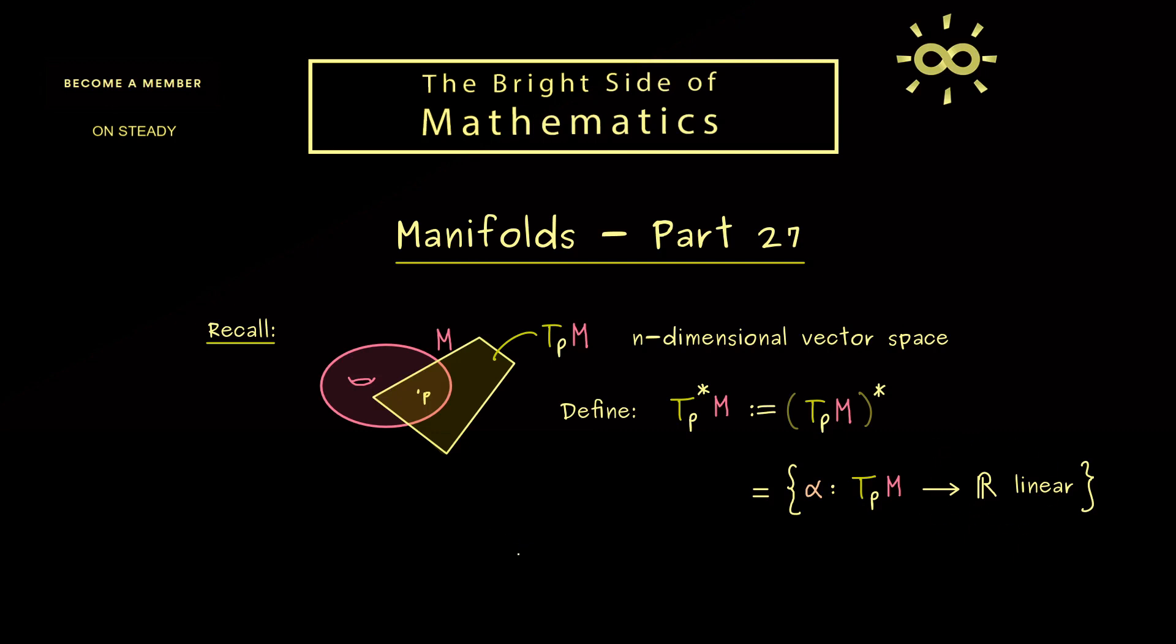And functional here just means that the codomain of the linear map is just given by the very simple vector space R. And now if you remember, in the last video we already considered such a linear functional, namely we called it dxj.